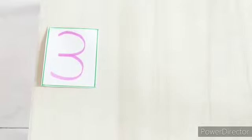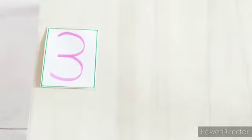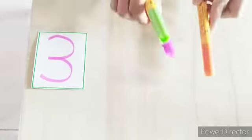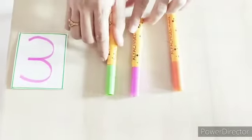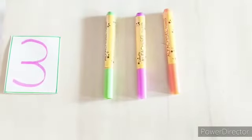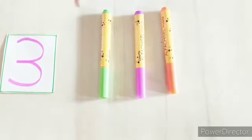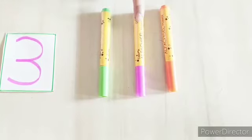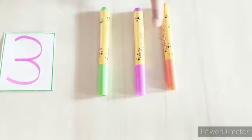Now we will see the value of number 3 using real objects. Let us count them children. Number 3. 1, 2, 3. 3 markers.